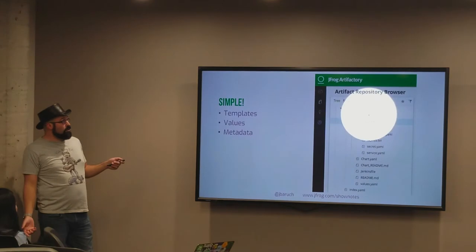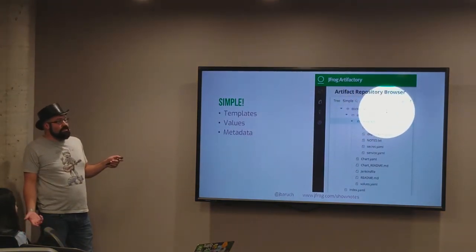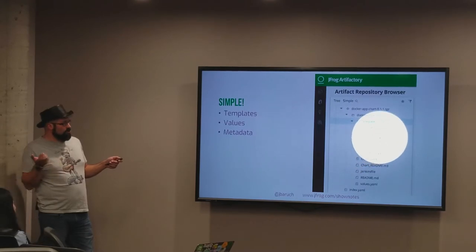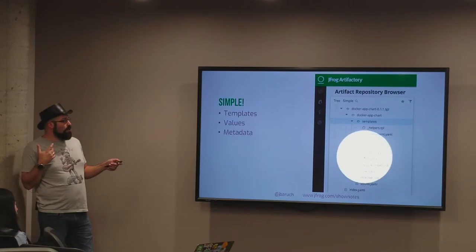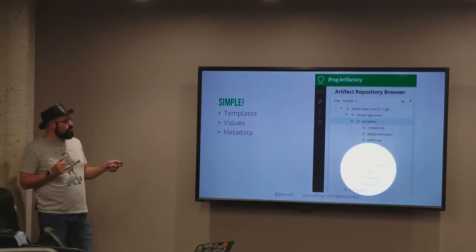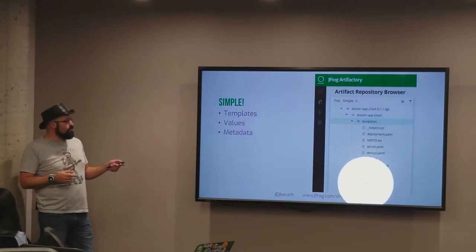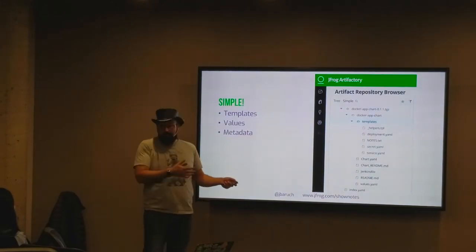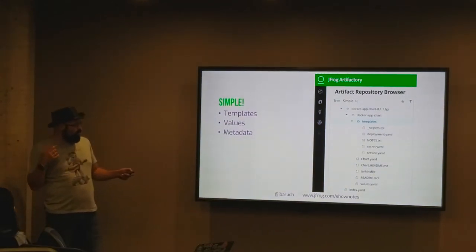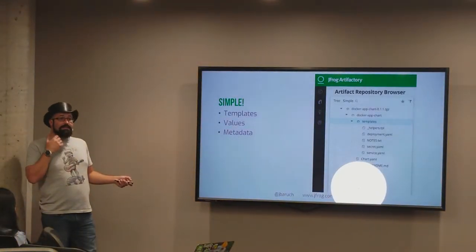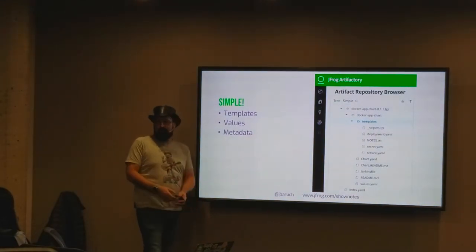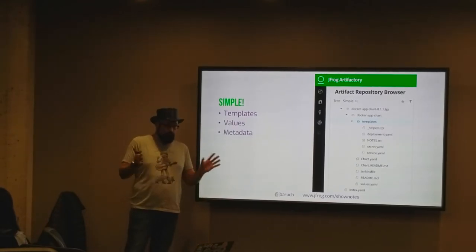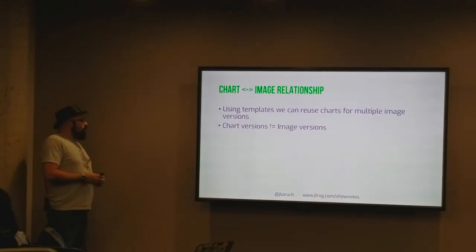Helm is very simple. A Helm chart is a `.tgz` archive. Inside it you have a bunch of templates - `deployment.yaml`, `secret.yaml`, `service.yaml`. You have the `Chart.yaml` which is the metadata about the chart, a README with readable text, and `values.yaml` with the values that populate those templates. There's also an `index.yaml` which is the index of your Helm repository - it contains the list of all charts available at that HTTP address.